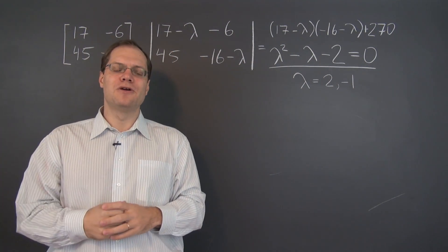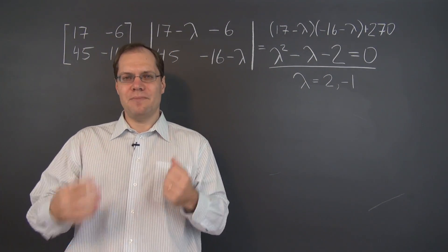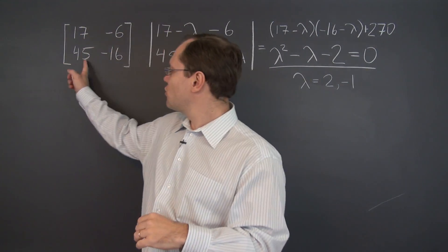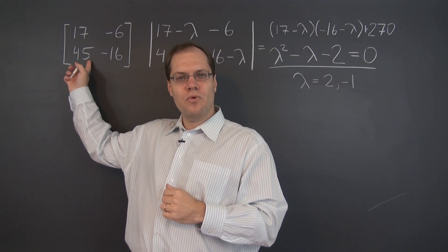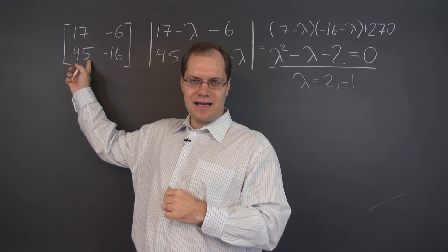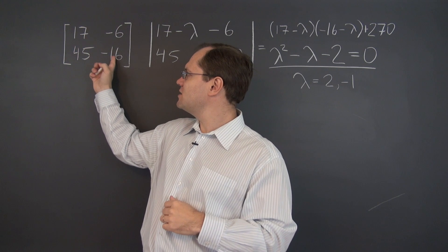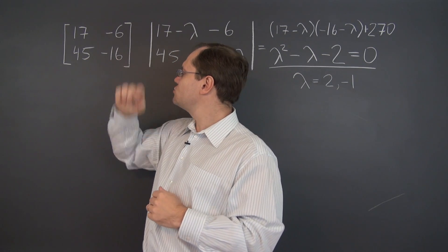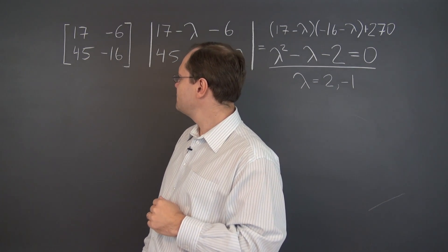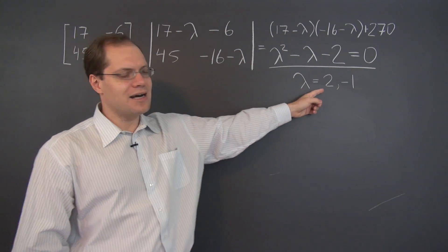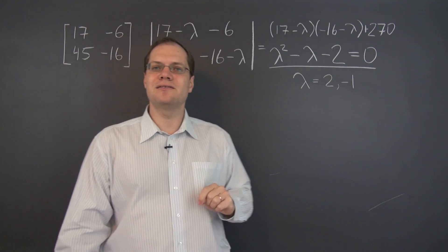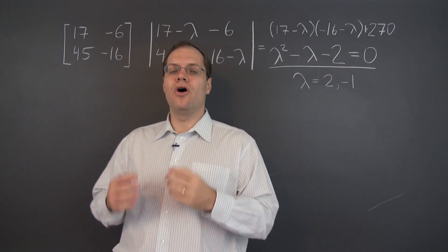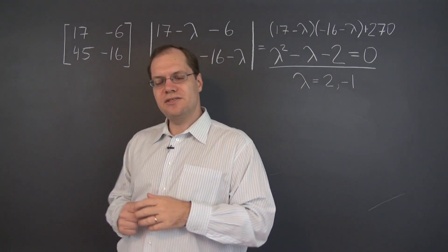And I now want to point out two magical things about eigenvalues. Let's look back at this matrix and determine its trace, which is the sum of the diagonal elements. And the trace of this matrix is 1. 17 minus 6 is 1. So the trace of this matrix is 1. And the sum of the eigenvalues is 1. Coincidence? Absolutely not. The sum of the eigenvalues always equals the trace of the matrix.